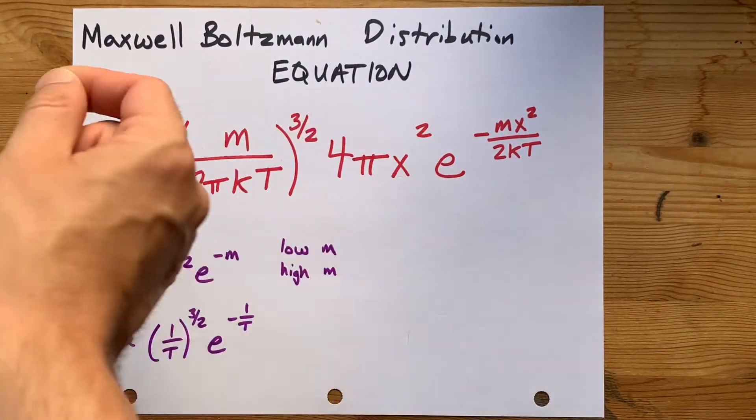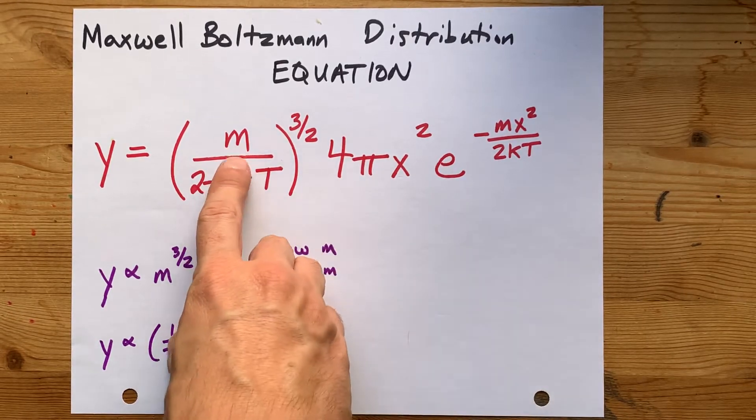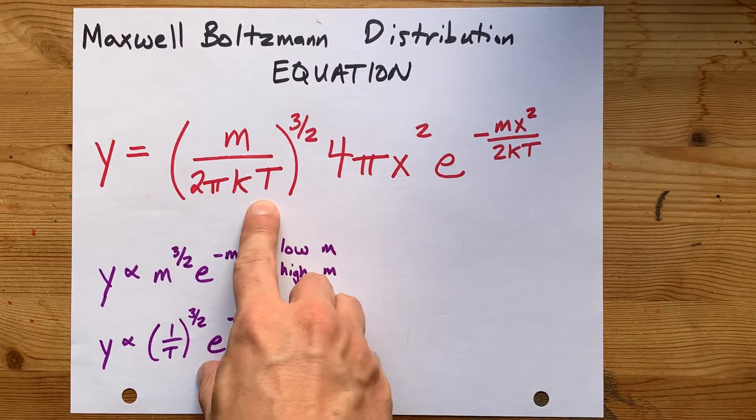Let's talk about the equation for the Maxwell-Boltzmann distribution and how it's controlled by the particle size or molecular mass and the temperature.